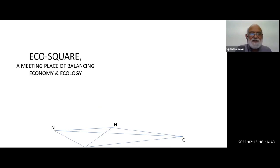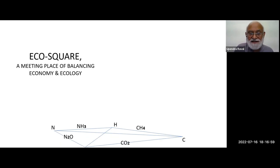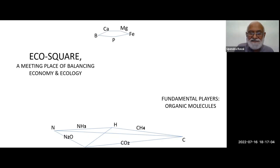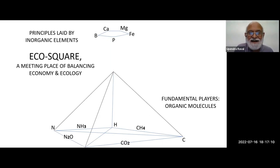Going back to some earlier things, eco-square is a concept in my mind where economy and ecology have a close handshake. You have carbon, hydrogen, nitrogen — these are the gases coming from that. They are fundamental organic molecules, and you have boron, phosphate, iron, etc.